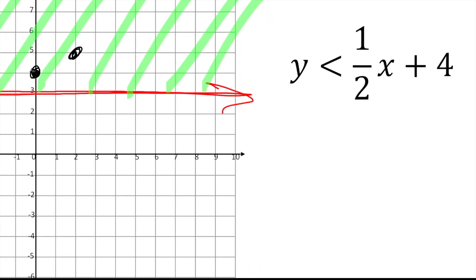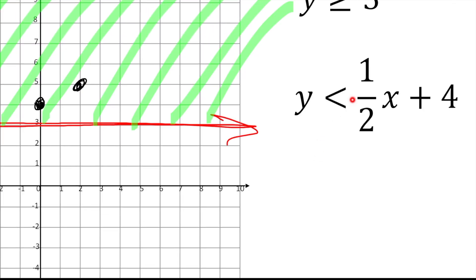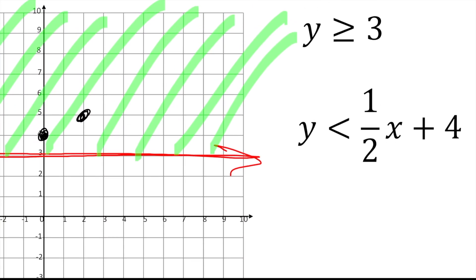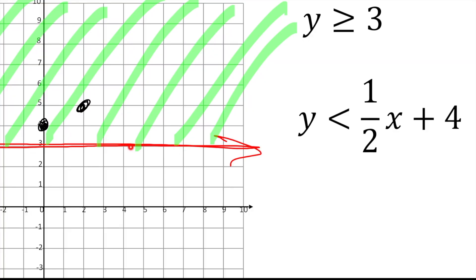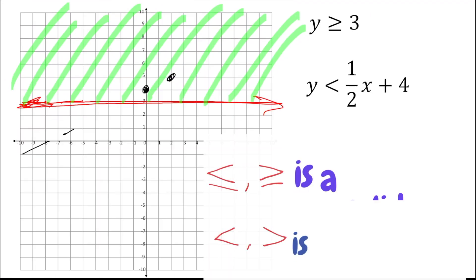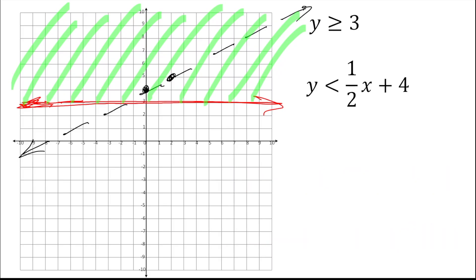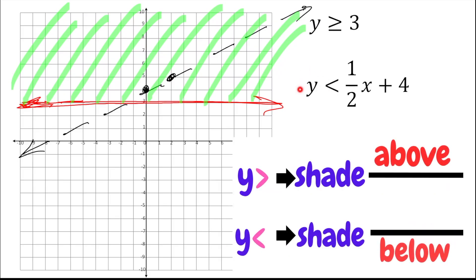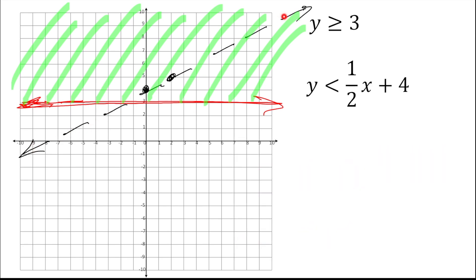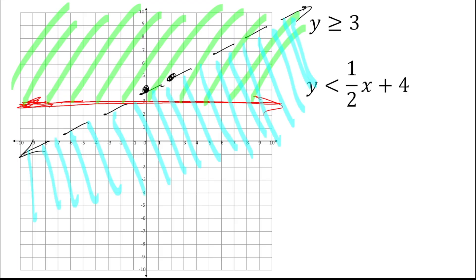Once I have my two points, it's time to draw the line. I check the inequality symbol — it does not have an equal sign underneath, so unlike the previous solid line, this one is going to be a dashed line. Once I have my line, it's time to shade. Since Y is less than, the shade is going to be below my line.